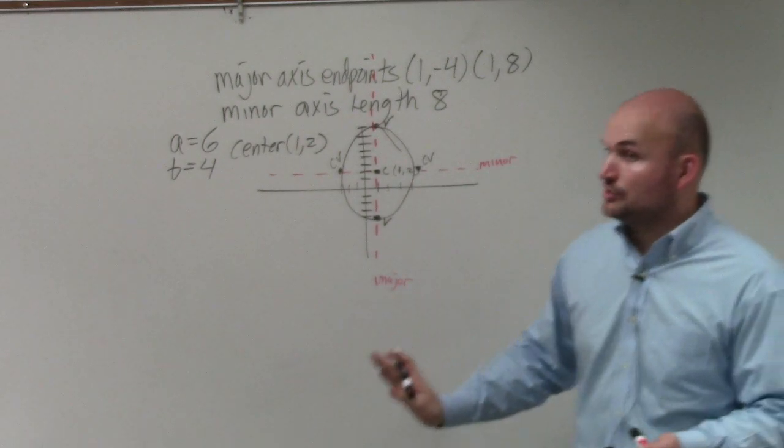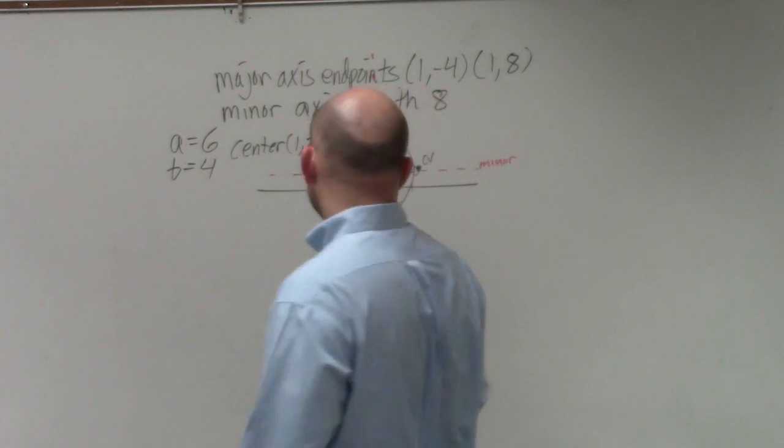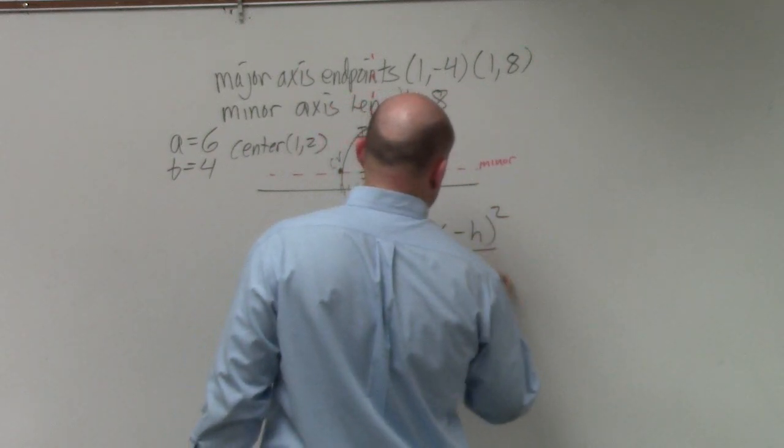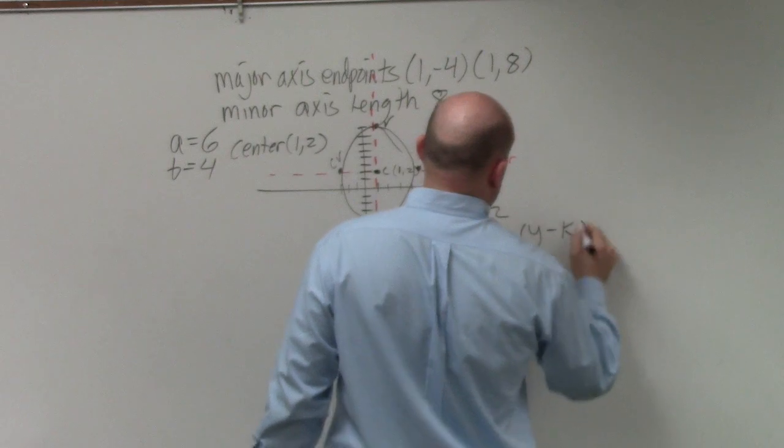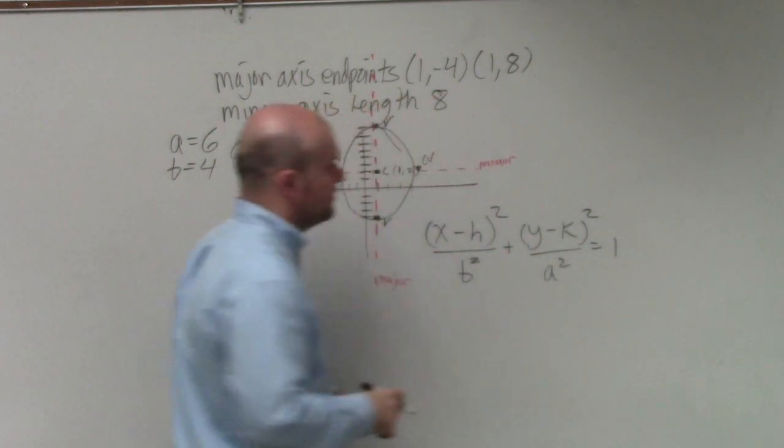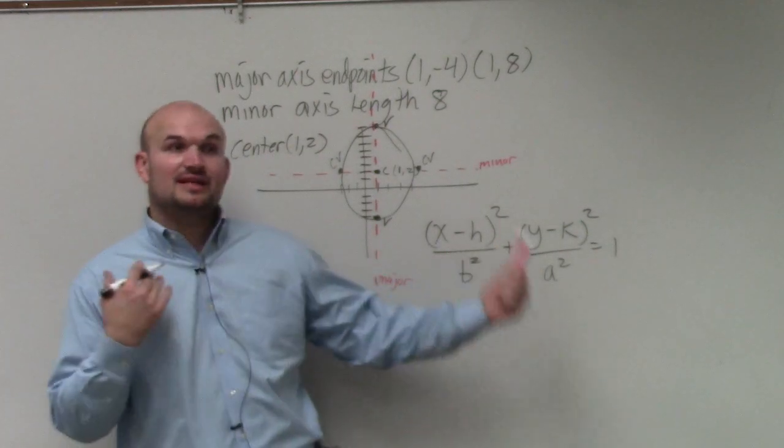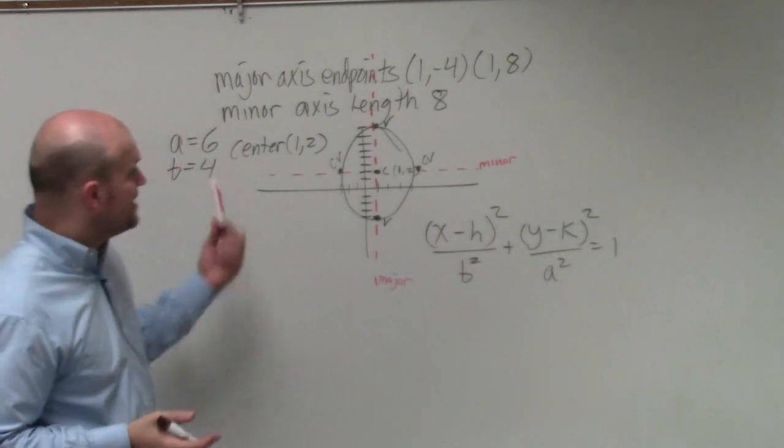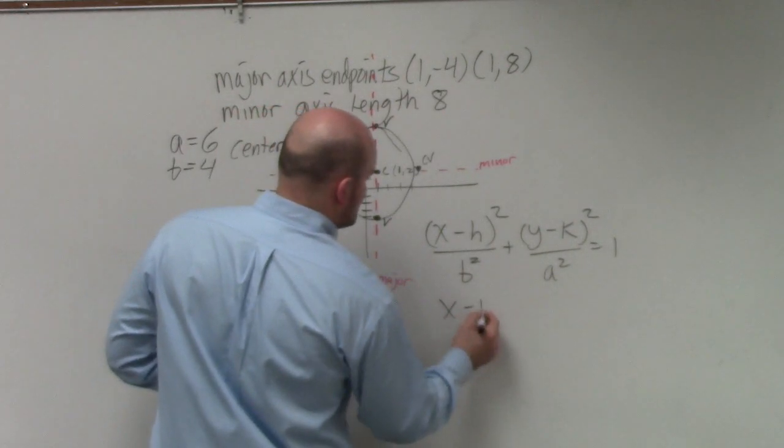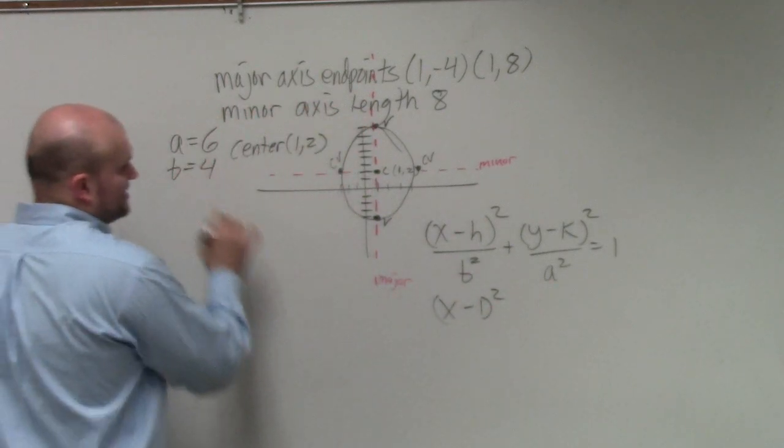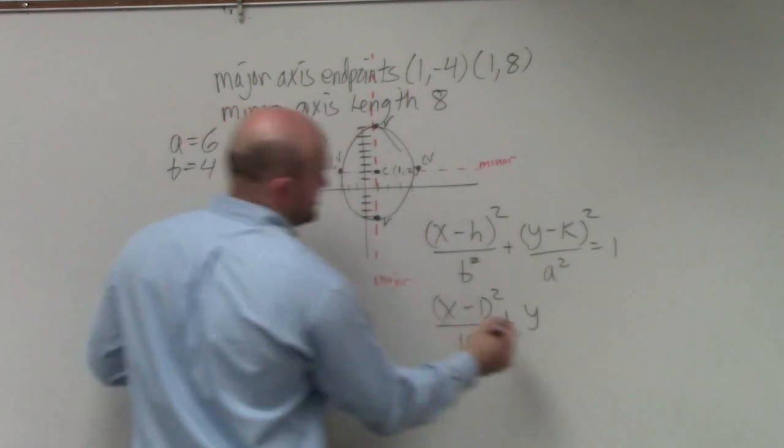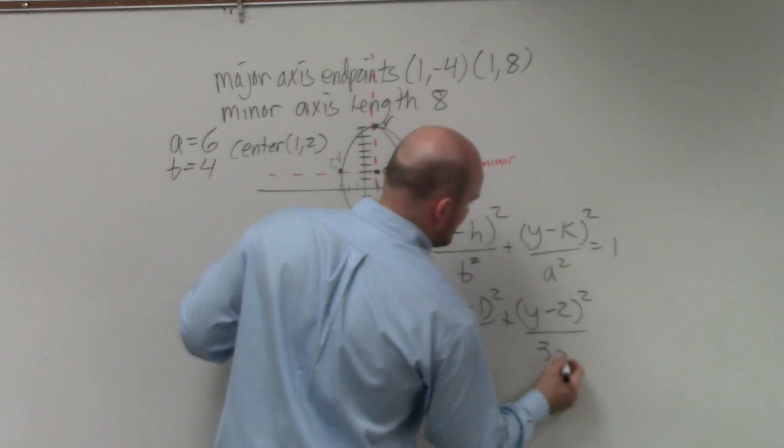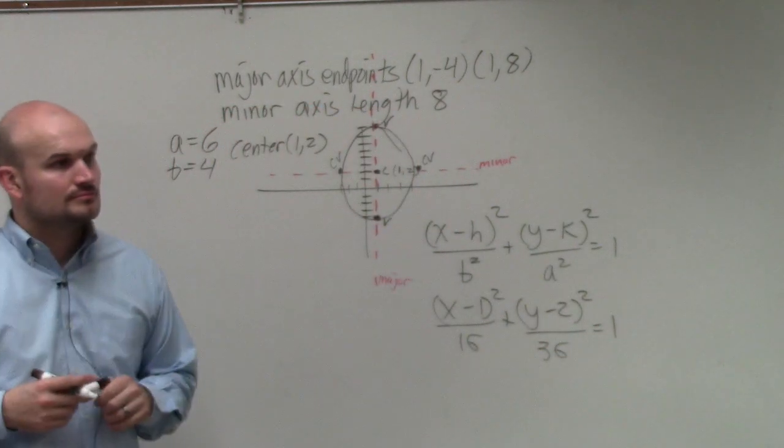So now we know our major axis is vertical. So unlike the last problem, we're going to use the other formula. So now I have x minus h squared over b squared plus y minus k squared over a squared equals 1. So the only difference between this equation and the last equation was a was under the x, right? When it has a major axis horizontal, a is under the x. So now you just plug in your information, x minus 1 squared divided by b squared, which is 16, plus y minus 2 squared over a squared, which is 36, equals 1.